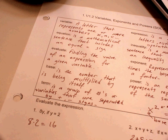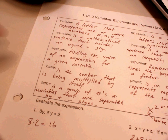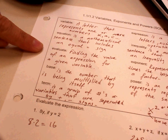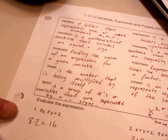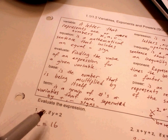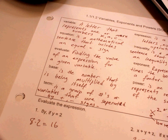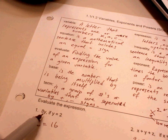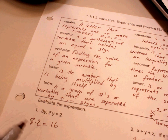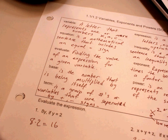Now we will look into evaluating expressions. Evaluating means we find the value of an expression for a given variable. In our first example, 8y, we evaluate when y equals 2. We substitute 2 where we see y, making it 8 times 2, which equals 16.